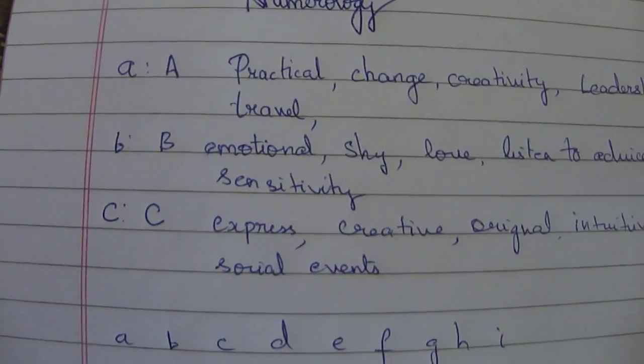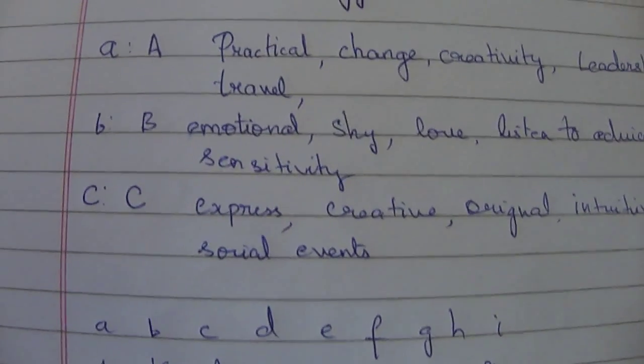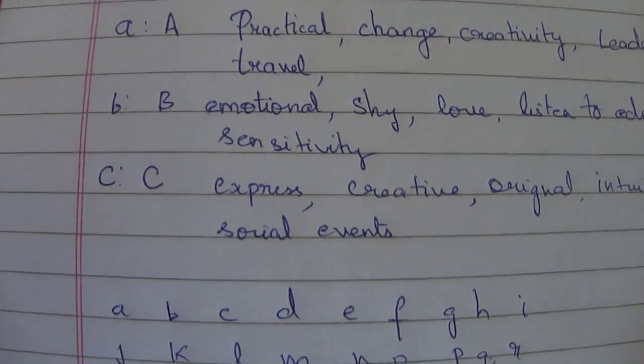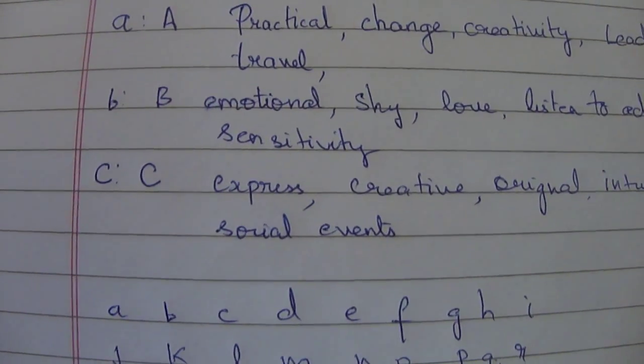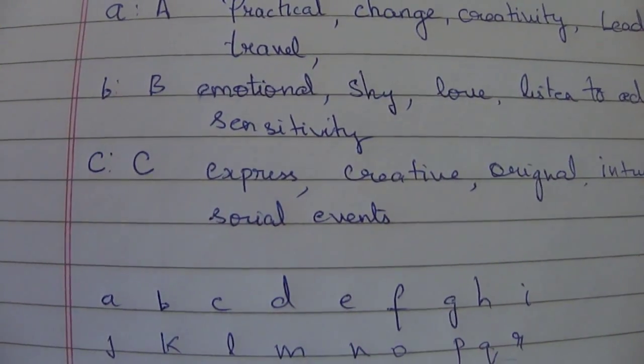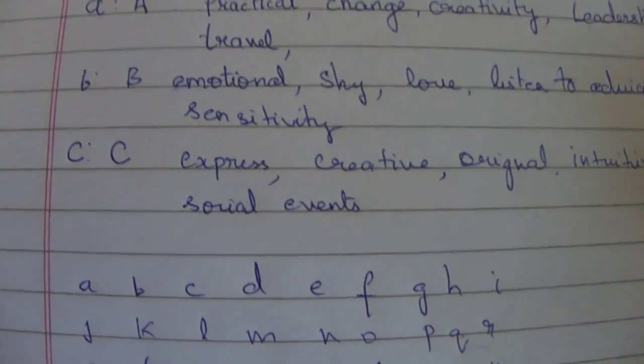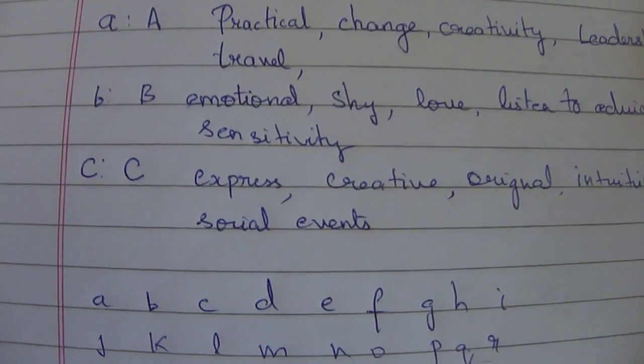Going with the letter B, B is more of a number like 2. So B is more emotional, more shy, more loving letter, and it also indicates listening to others' advices for more success. It also indicates towards sensitivity.